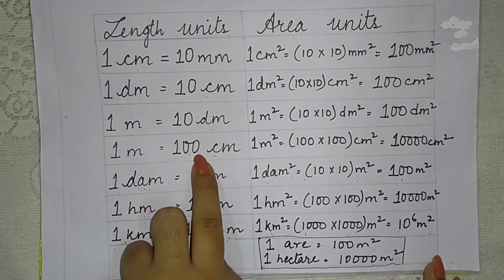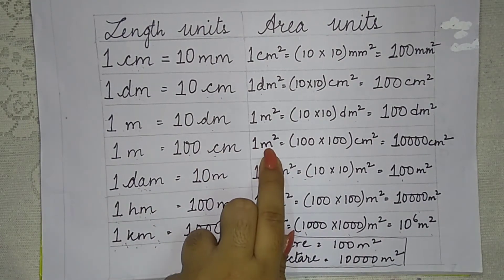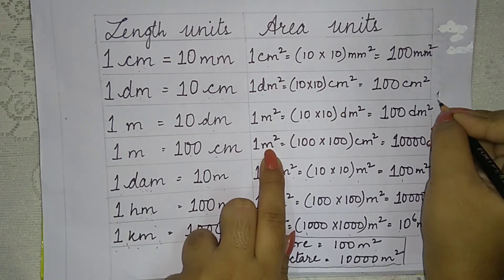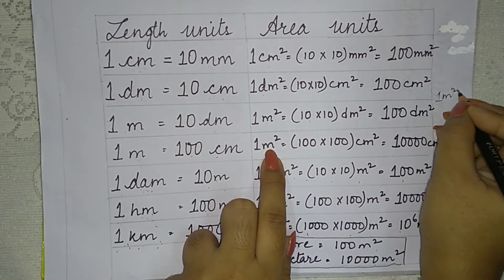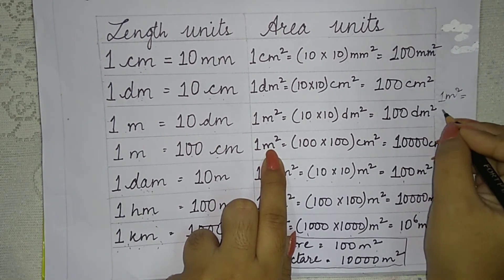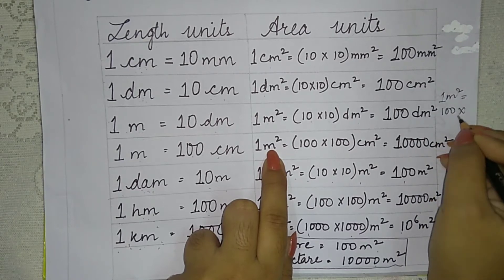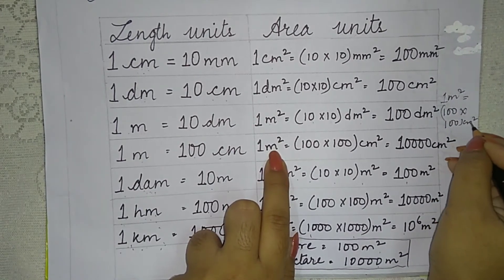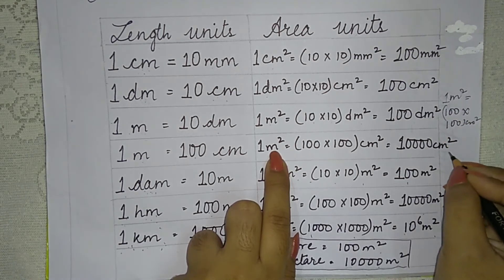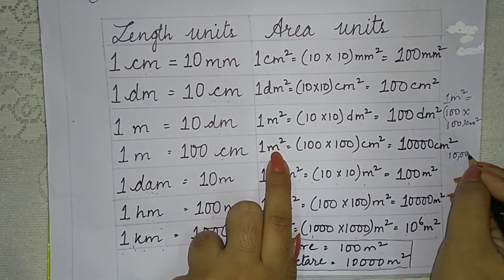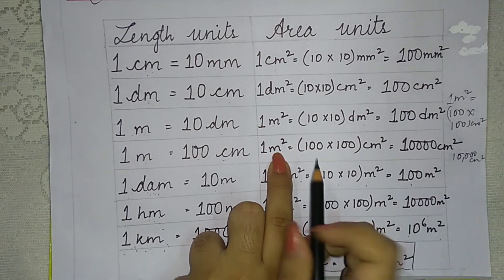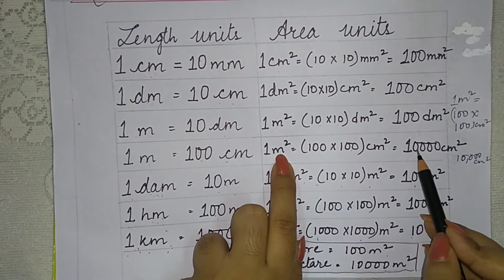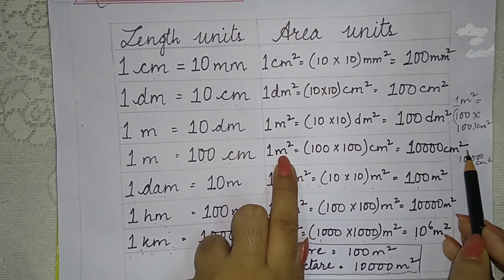Since 1 meter equals 100 centimeters, 1 meter square equals 100 into 100 centimeter square. That means 100 into 100 equals 10,000 centimeter square. You just have to square the length conversion factor.